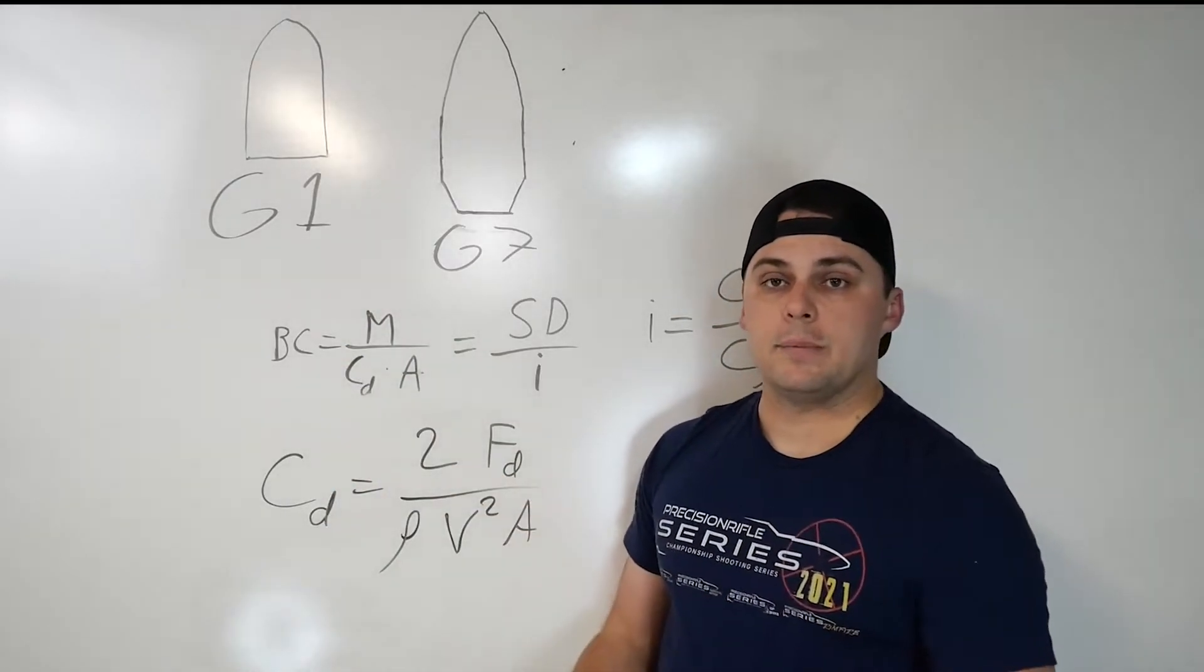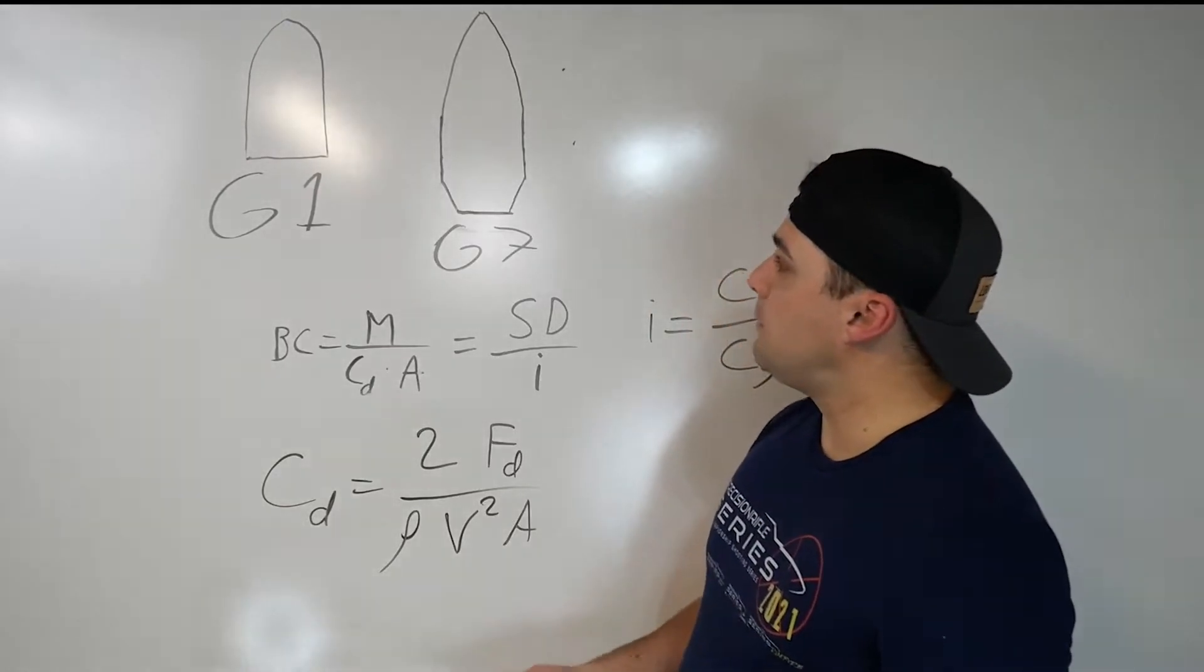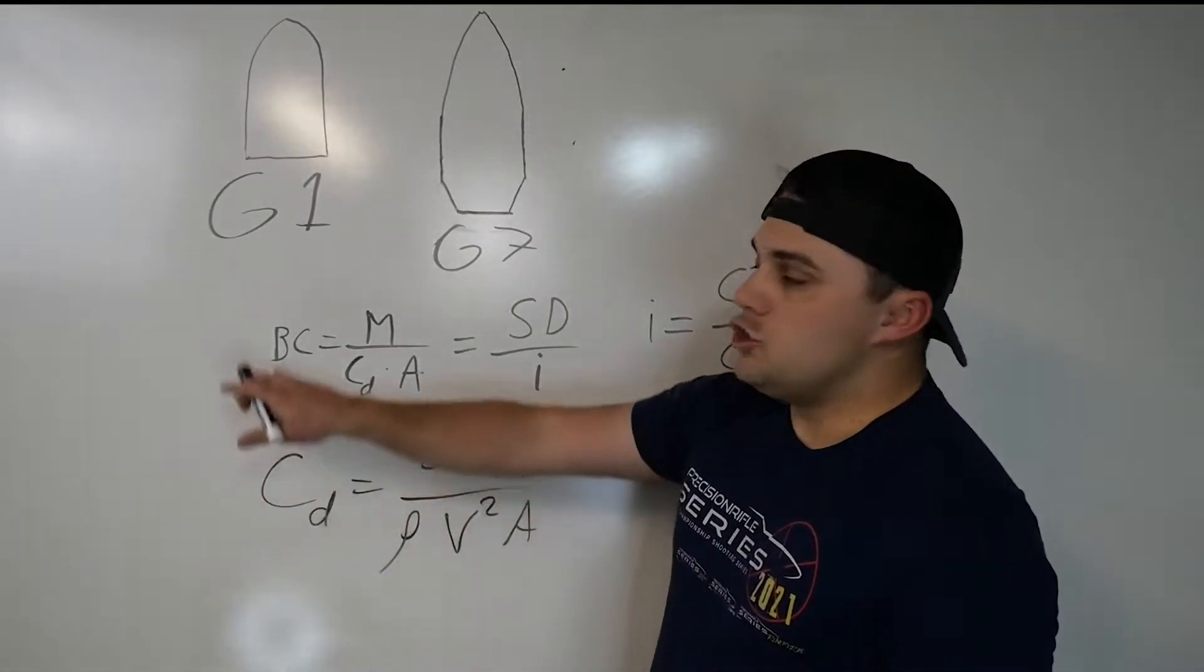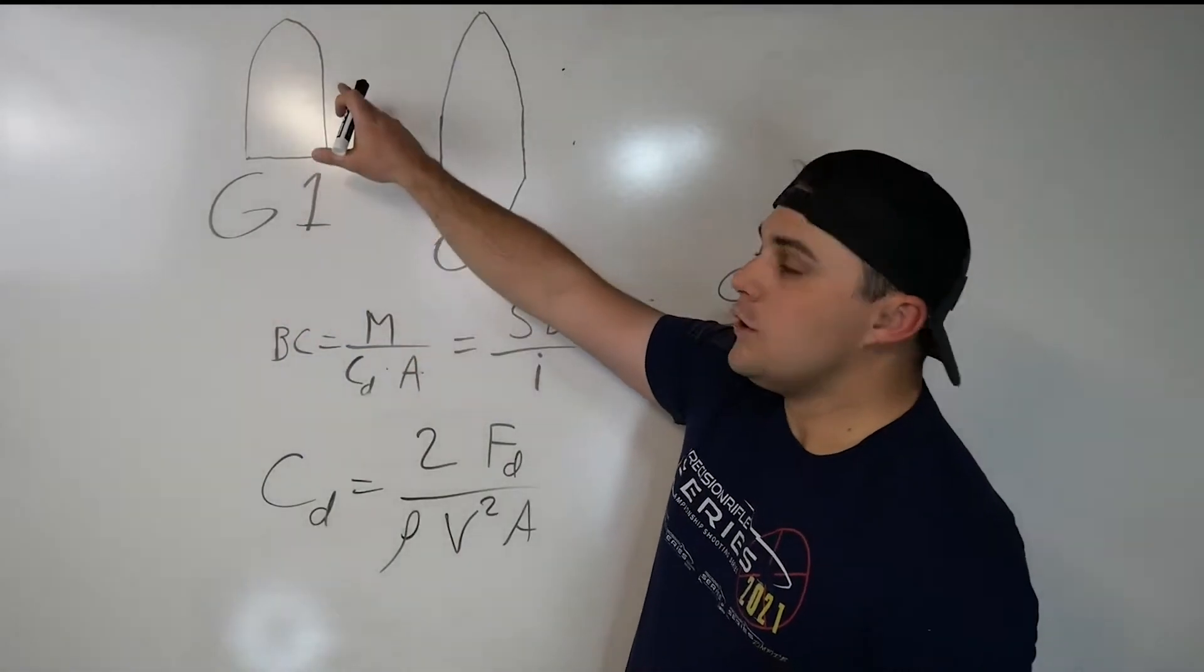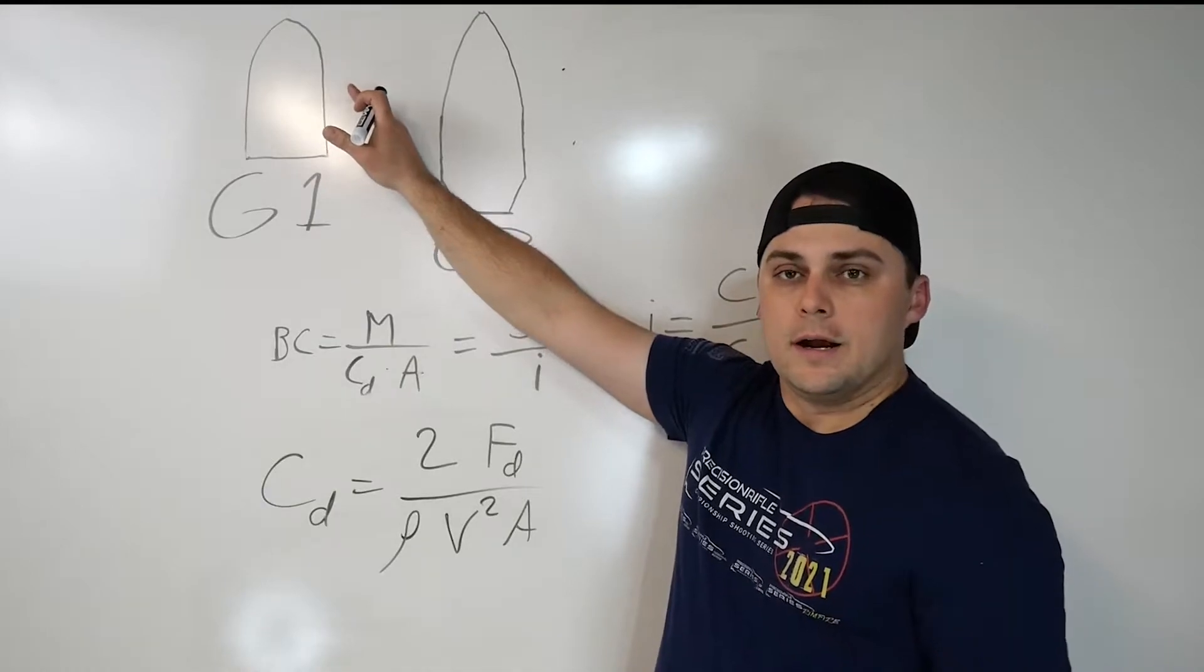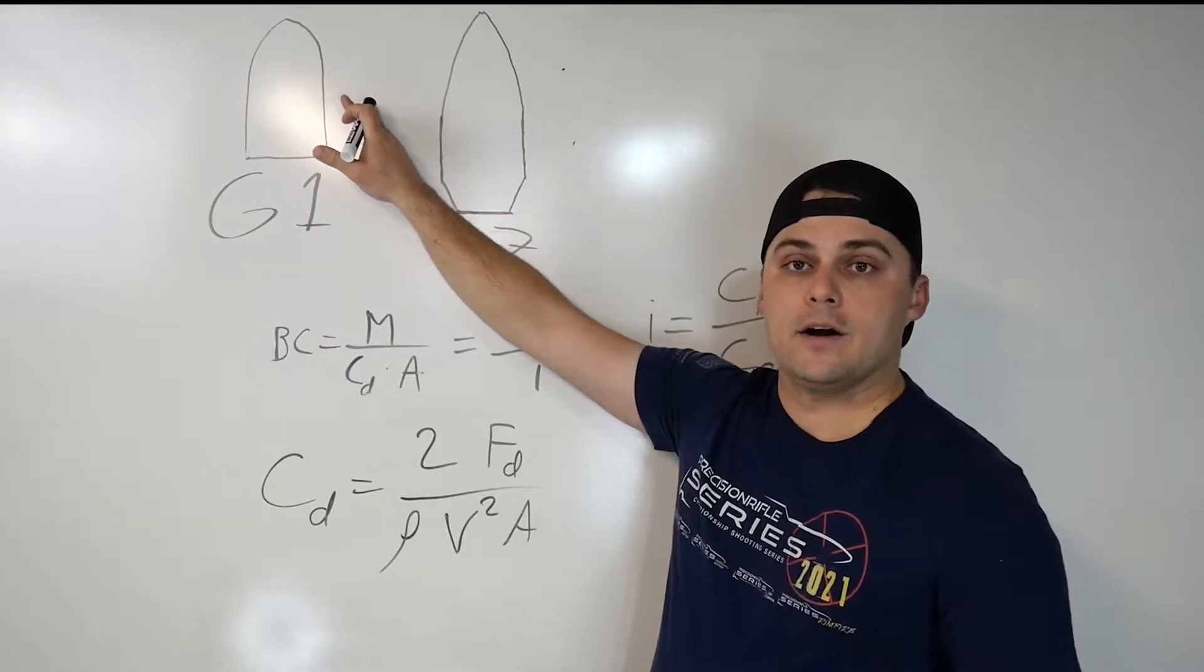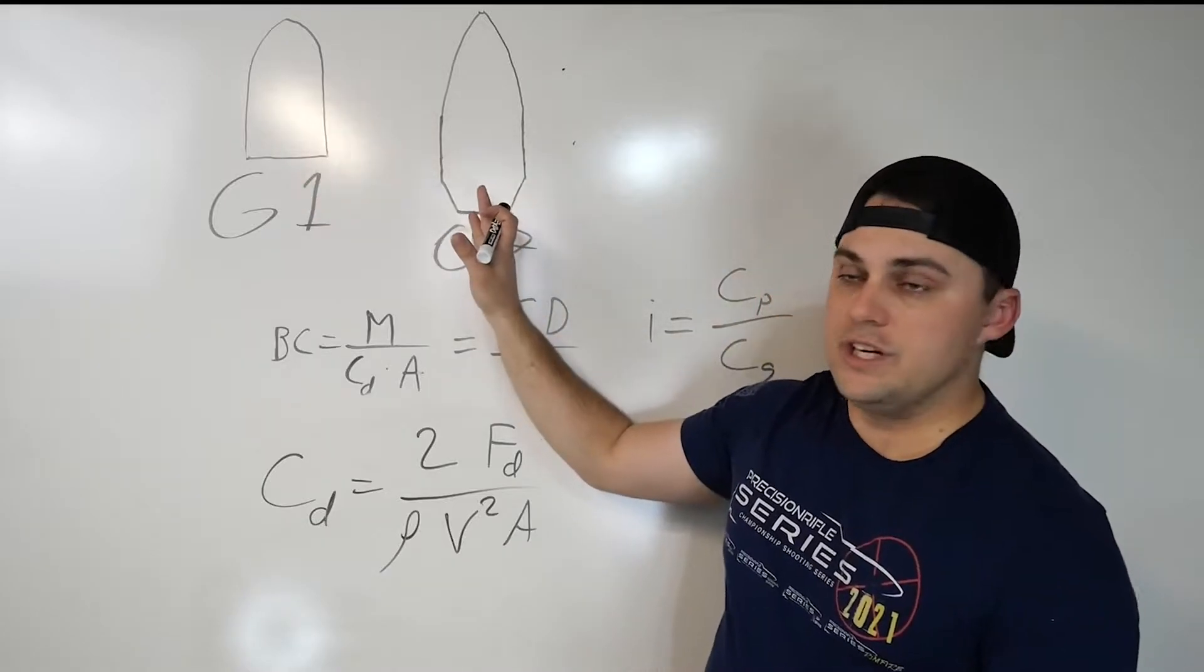We'll look at here in a second how that compares to the BC you're getting on your box. But the most important thing to pick out of this is the G1 is actually made for this shape. You will typically see it on some of your long range bullets because that ballistic coefficient ends up being higher on the G1 than the G7.